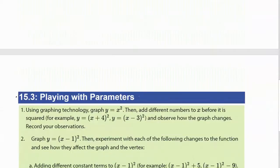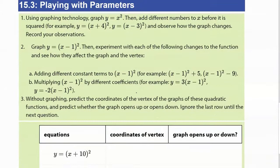So playing with the parameters. This is something mostly for you. Desmos is going to save you so much time. You have your parent function, which is a normal quadratic function. Its vertex is at zero, zero. And they said add different numbers to x before it's squared. So add a 4 inside. Add a negative 3 inside. And record your observations. See what happens on Desmos. So go ahead and try plugging those in for Desmos and see what happens.